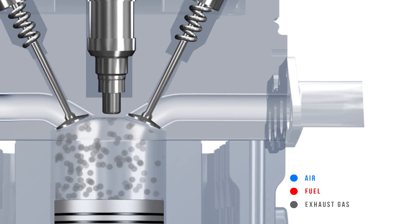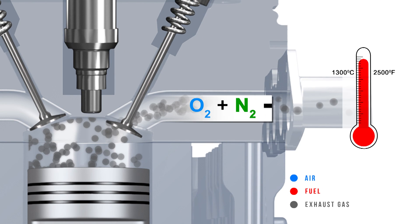At temperatures above 1300 degrees Celsius, oxygen and nitrogen combine to form oxides of nitrogen or NOx.